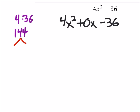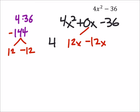That would be negative 144 technically, so we're going to make that 12 and negative 12. So we're going to split zero up into 12x minus 12x, and we still got the 4x² and the minus 36.